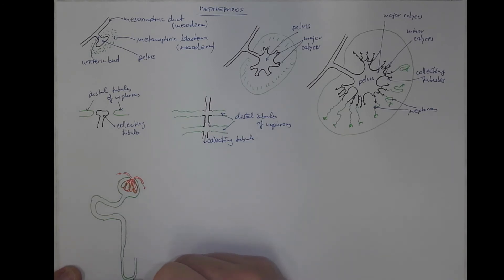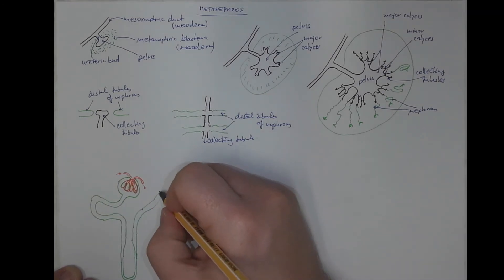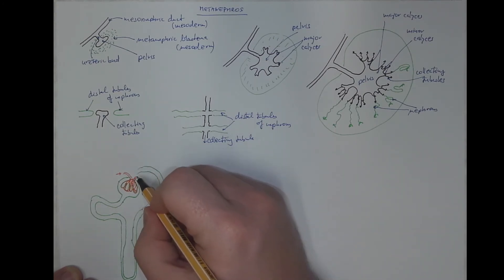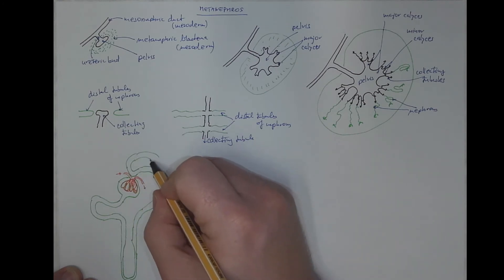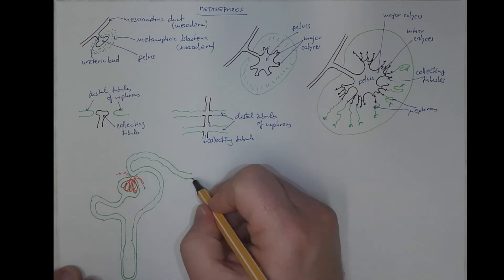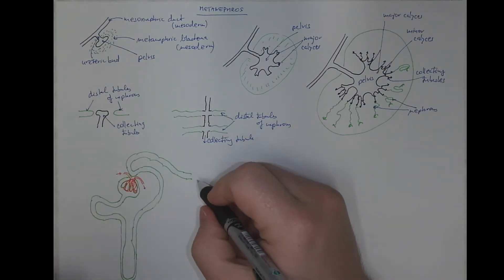It's the descending limb, the ascending limb with its thin segment and thick segment and it comes back and becomes the distal tubule, which comes close to the vascular pole of the renal corpuscle, therefore becoming the macula densa, an organ of chemoreception, and then entering one of these collecting tubules.